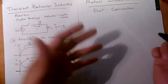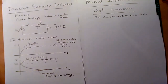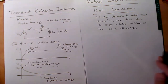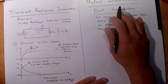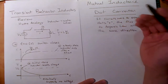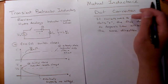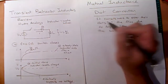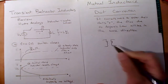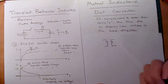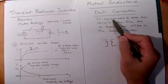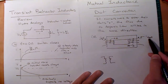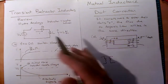Now let's move into transformers, because a transformer is just a combination of two or more inductors. We've talked about the dot convention and used it to determine the sign for mutual inductance, but we never talked about how to set up the dots. Right now we're going to discuss how to set them up. You need to see the individual coil wraps around the core — if you just see the symbol, you cannot set up the dots. But if you actually see the wrappings, then you can.